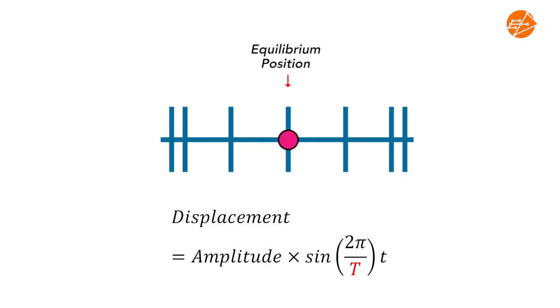Period T is the time taken for the particle to travel one full cycle. Let's simulate the particle motion with period T equal to 12 seconds.